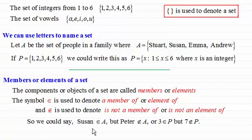So we could say that Susan is a member of A, but Peter is not a member of A. Or we could say that three is a member of P, but seven is not a member of the set P.